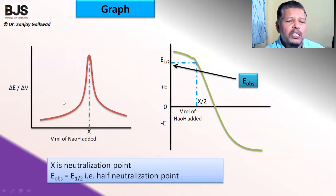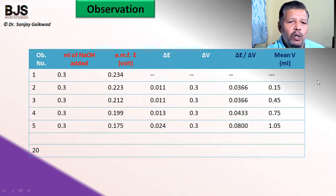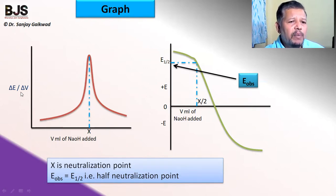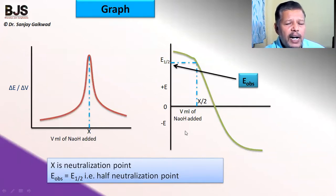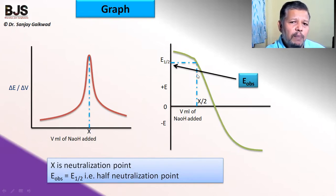After recording all observations, plot two graphs. The first graph: volume of NaOH added (x-axis) versus ΔE/ΔV (y-axis) — this is the derivative graph. It is observed that ΔE/ΔV increases to a peak and then decreases, forming a bell-shaped curve. The second graph: volume of NaOH added (x-axis) versus observed EMF (y-axis) — here the EMF starts at a maximum, decreases, crosses zero, and goes into the negative side.